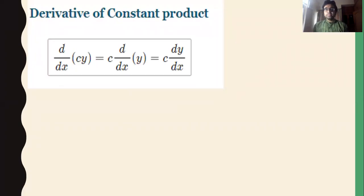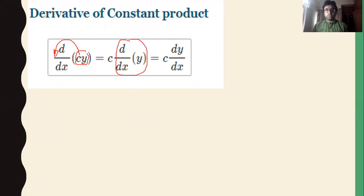We have discussed some rules about differentiation and today we are going to study a new rule called the Derivative of a Constant Product. The rule of differentiation states that if there is any constant term in the function, we separate that constant term from the differentiation and then differentiate the rest. Finally, we get c into dy by dx.